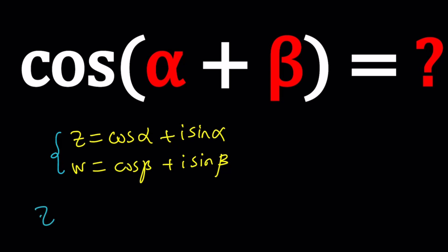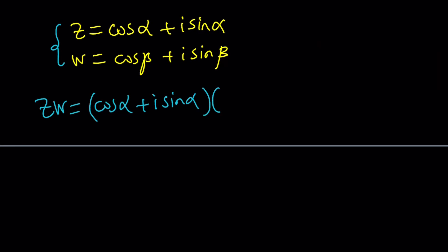Hopefully you know how to multiply them. Take cosine alpha plus I sine alpha and multiply it by cosine beta plus I sine beta. By the way, I said polar form, but this would probably be the standard form with sine and cosine in place. I picked two numbers with modulus one — you don't have to, but I think it's a little easier that way.